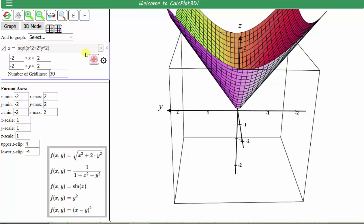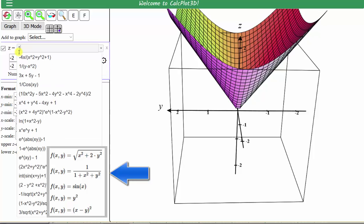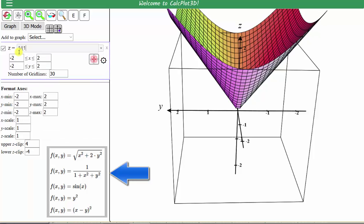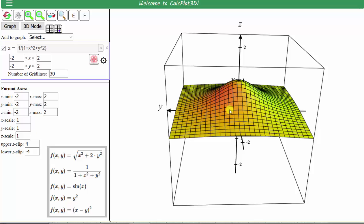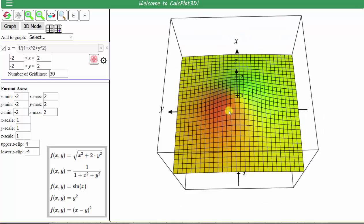Let's graph our second function, which is f of x comma y equals 1 divided by the quantity 1 plus x squared plus y squared. So we'll go ahead and clear this function. Enter 1 divided by, open parenthesis, 1 plus x to the second, plus y to the second. Close parenthesis and enter or click graph. And here is the graph of our second surface.